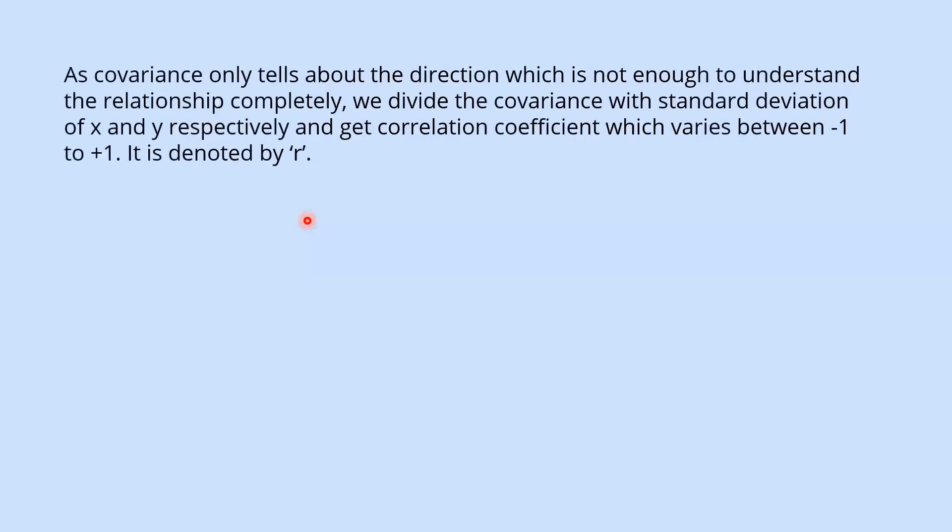As covariance only tells about the direction which is not enough to understand the relationship completely, we divide the covariance with standard deviation of x and y respectively and get correlation coefficient which varies between -1 to +1. It is denoted by r.